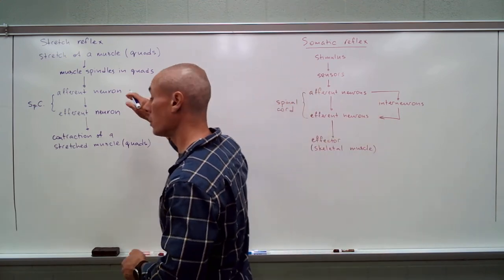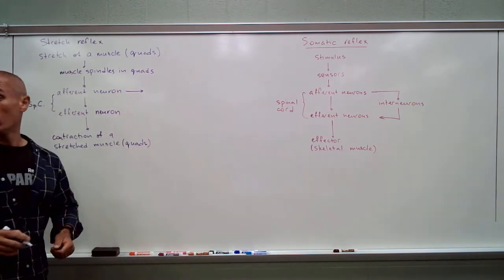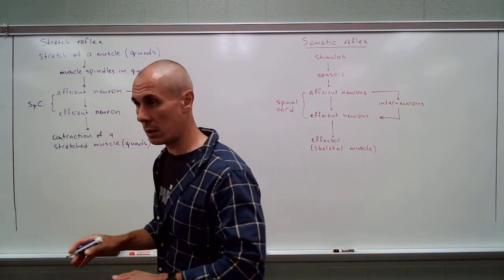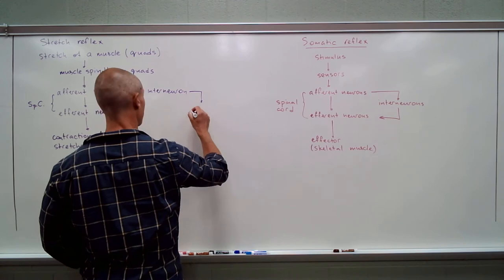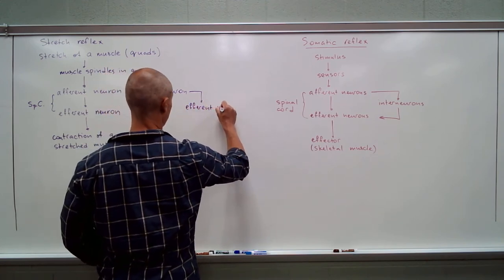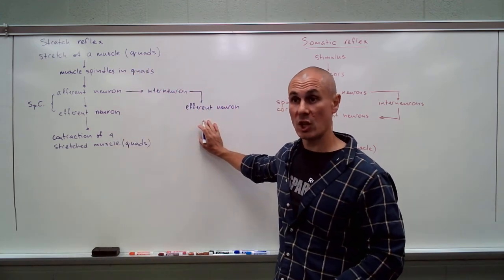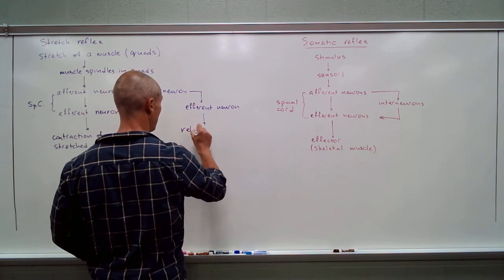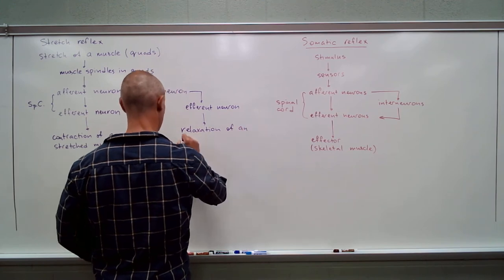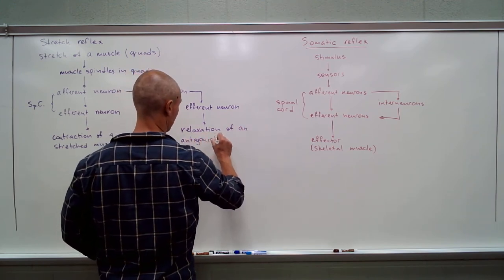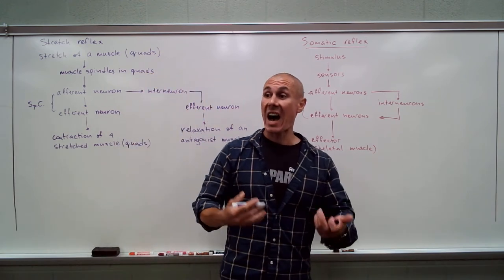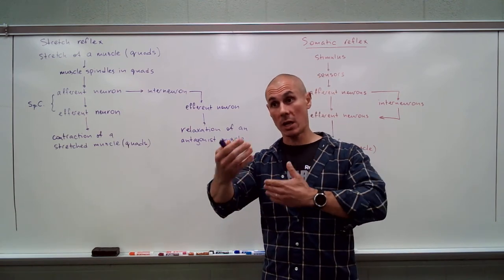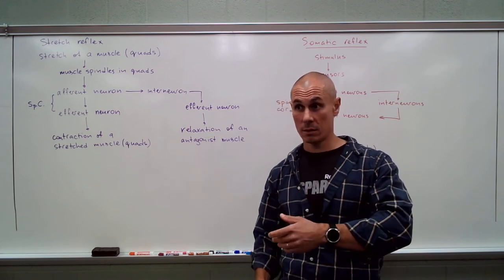But not only this — there's also the interneuron story. The afferent neuron also synapses with an interneuron, all happening in the spinal cord. That interneuron further synapses with a completely different efferent neuron, which sends an inhibitory signal resulting in the relaxation of the antagonist muscle — which in this case is the hamstrings, the opposite of the quadriceps.